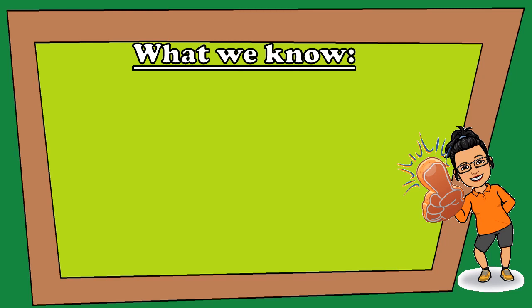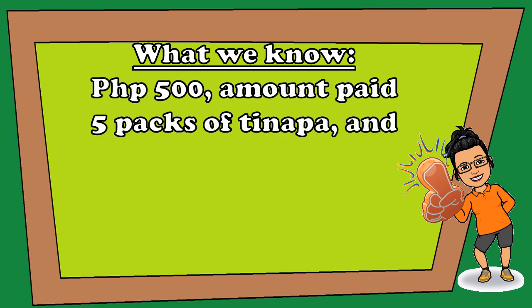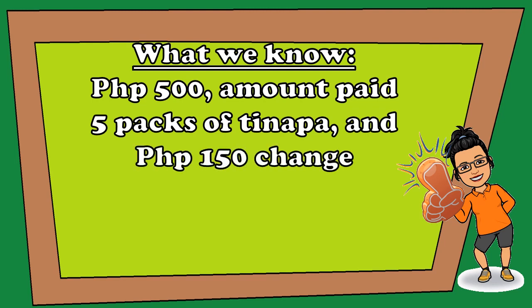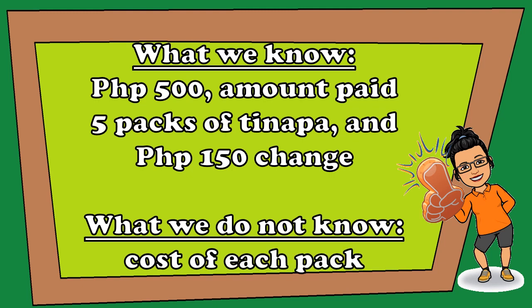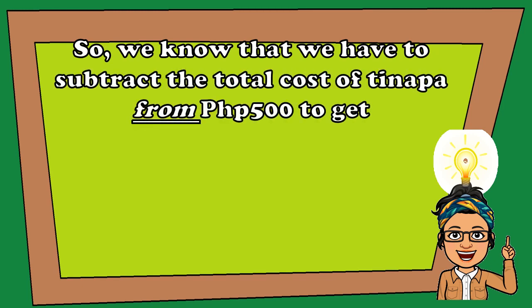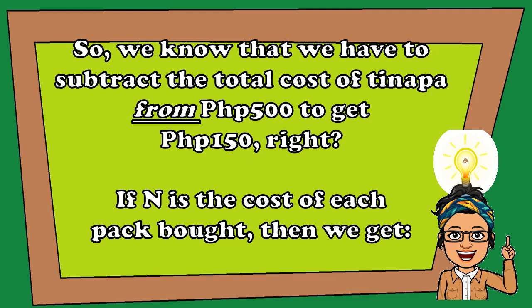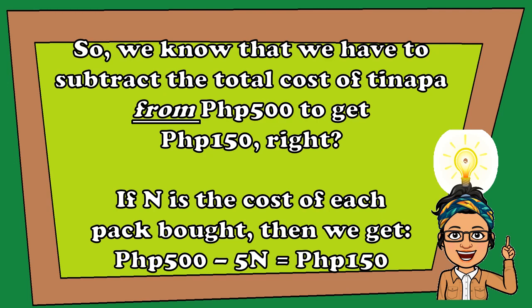These are what we know from the problem: 500 pesos, or the amount paid; 5 packs of Tinapa; and 150 pesos change. What we do not know is the cost of each pack. We subtract the total cost of Tinapa from 500 pesos to get 150 pesos. If n is the cost of each pack, then 500 minus 5n equals 150 pesos.